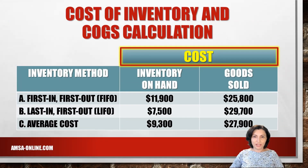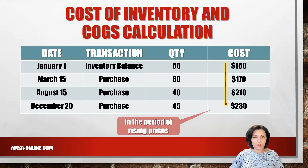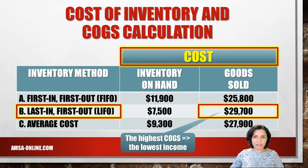Now let's compare the results of the costing methods side by side. As inventory was purchased during the year at different prices, the amounts of inventory on hand and cost of goods sold differ under each method. In our example, costs increased several times during the year. In a period of rising prices, LIFO produces the highest cost of goods sold and FIFO the lowest, meaning LIFO results in the lowest net income and FIFO results in the highest net income.